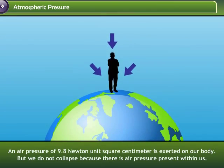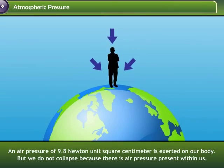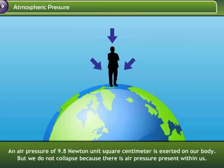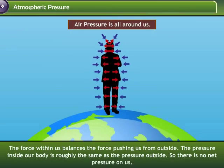An air pressure of 9.8 Newton per square centimeter is exerted on our body. But we do not collapse because there is air pressure present within us. The force within us balances the force pushing us from outside. The pressure inside our body is roughly the same as the pressure outside, so there is no net pressure on us.